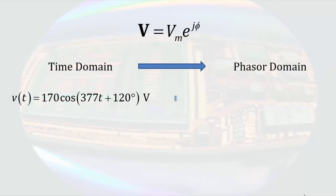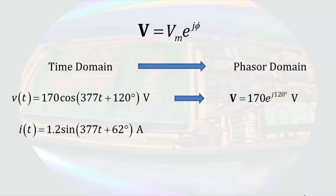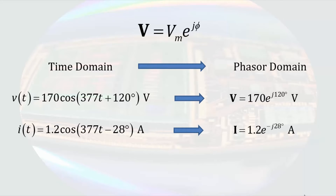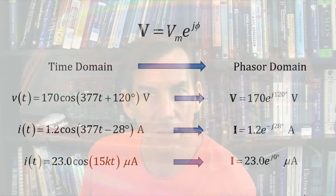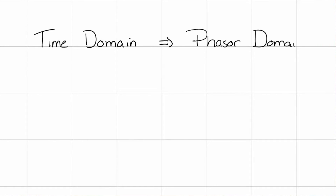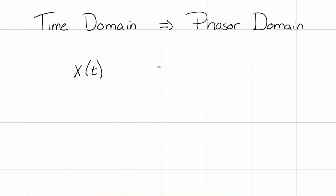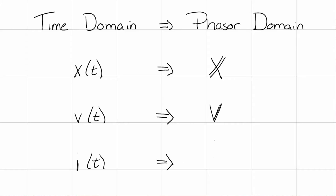Starting from time-domain expressions, we need to convert them to the phasor domain. For a cosine function this is as simple as writing the magnitude times the exponential raised to j times the phase angle. If the time-domain expression is a sine function, we first change it to cosine by subtracting 90 degrees from the argument, then write it as a magnitude and phase angle. In books and print, phasors are denoted by a capital letter in bold text. In handwritten work I denote phasor quantities by drawing an extra line on the letters — so x(t) becomes a capital X with a double line.